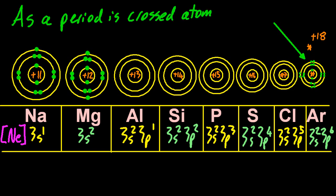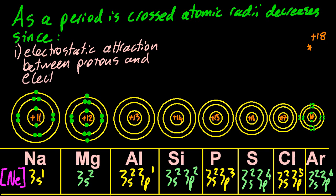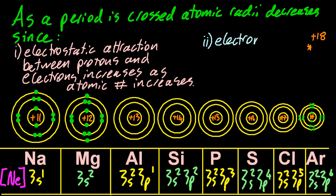So as a period is crossed the atomic radii decreases since, and there's two reasons: electrostatic attraction, that's plus to minus attraction, between protons and electrons increases as the atomic number increases. And the second reason is electrons are added to the same shell. That's just a weird IB answer that you need to get the second point from.